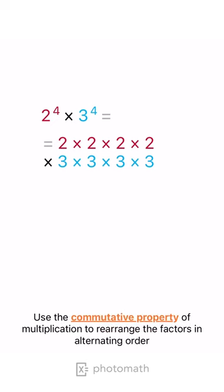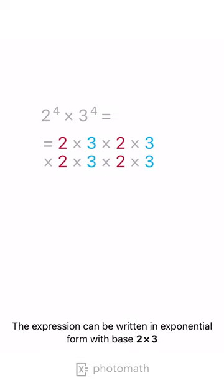Use the commutative property of multiplication to rearrange the factors in alternating order. The expression can be written in exponential form with base 2 times 3.